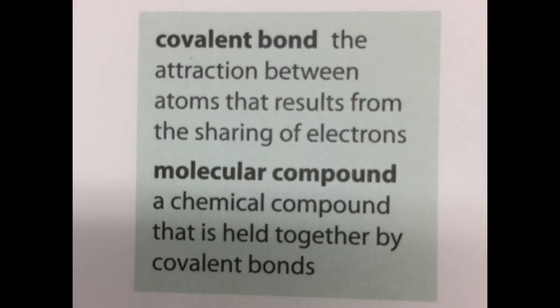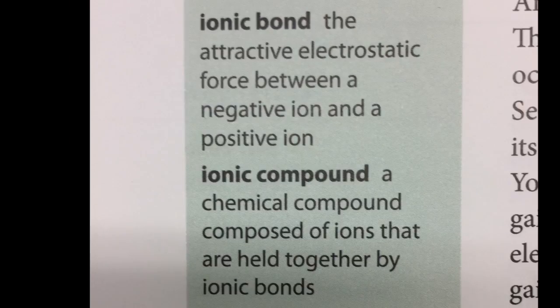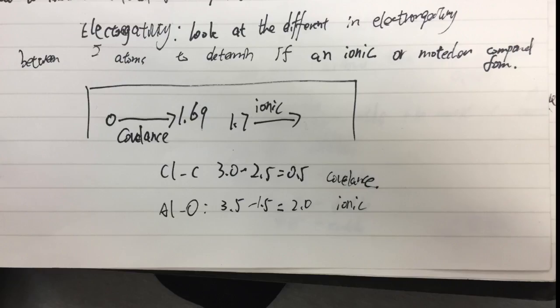Let's start with Lewis diagrams first. We have to know: what is an ionic compound and what is a covalent compound? A covalent bond is the attraction between atoms that results from sharing of electrons. An ionic bond is an attractive electrostatic force between a negative ion and a positive ion — there is a transfer of electrons. The difference between them is electronegativity: if the difference is smaller than 1.7, it's a covalent compound; if it's greater than 1.7, it's an ionic compound.